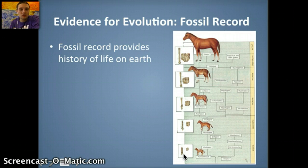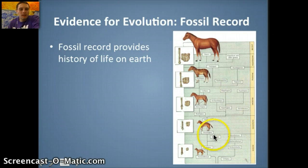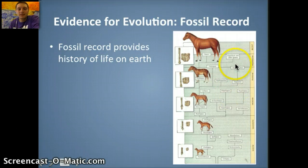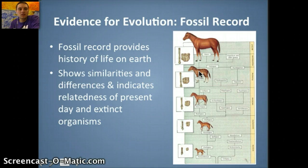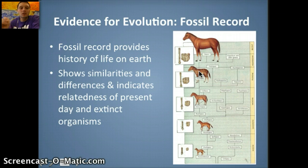As that environment changed, we see changes in the fossil record, progressing from a four-hoof shape to the single-hoof shape we see in horses today. The important thing to remember is that this is not a straight linear progression — there are other branching lines, and some end, representing different related species that are now mostly extinct. The fossil record shows similarities and differences indicating relatedness of present-day and extinct organisms, allowing us to see how species changed and adapted to their environments over time.